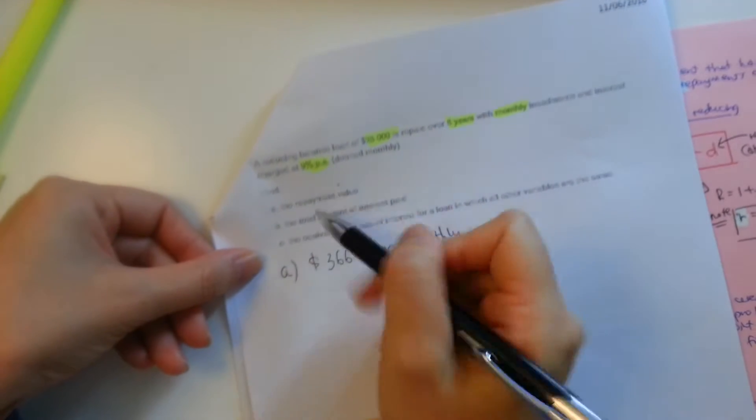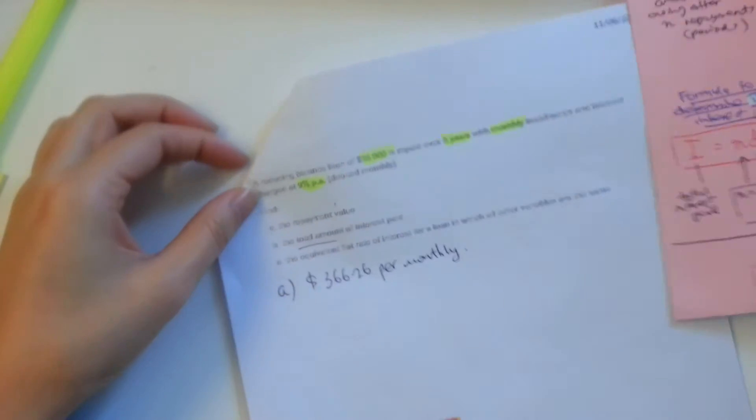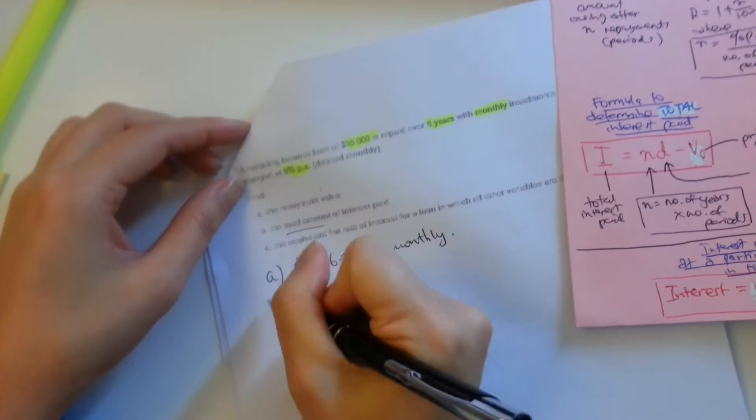The total amount of interest paid, remember, total amount of interest, we're using our total interest formula here. Okay. This one's nice and easy, there's nothing left over.